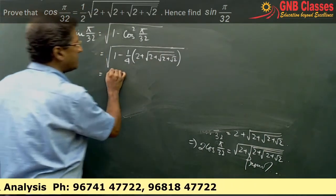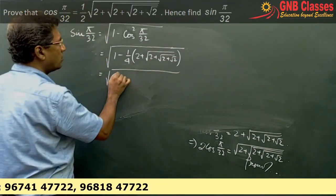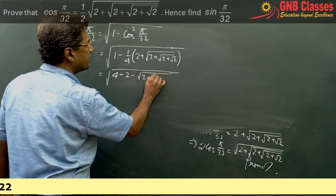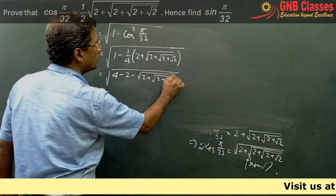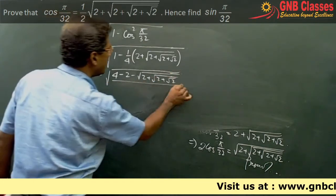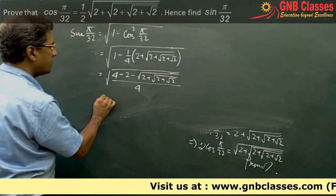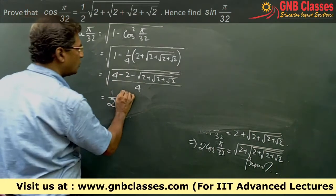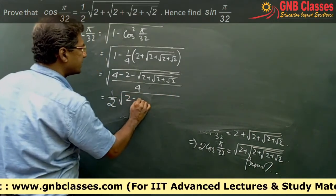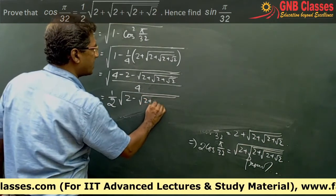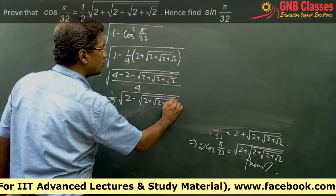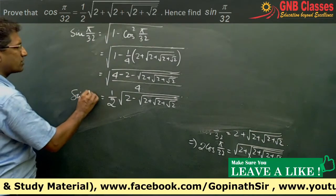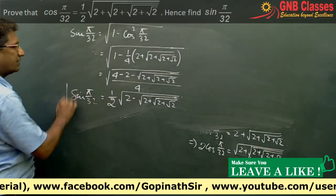Opening the bracket we get (4 − 2 − √(2 + √(2 + √2))) / 4. So sin(π/32) = (1/2)√(2 − √(2 + √(2 + √2))). That is the value of sin(π/32).